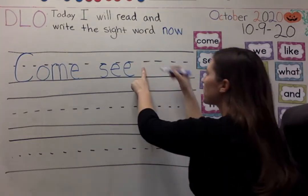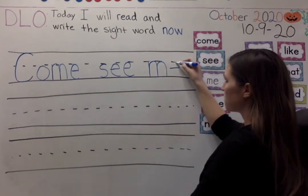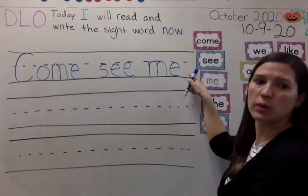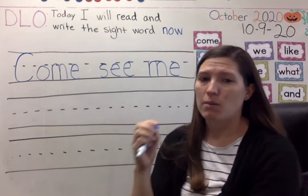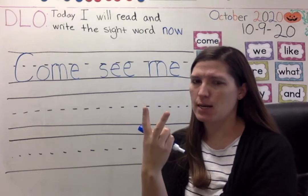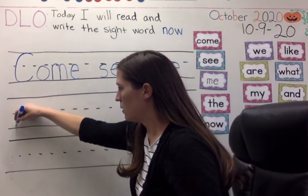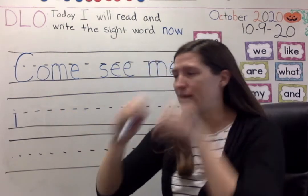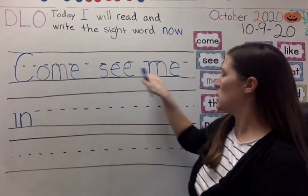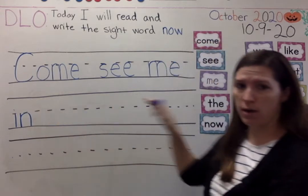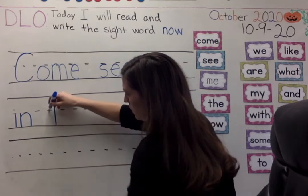Me — M-E. I ran out of room, so I need to go to the next line. 'In' — in is also a sight word but we can sound it out. I-N. What says I? I-I. What says N-N-N. Come see me in the — T-H-E, T-H-E — finger space. T-H-E, that's how to spell 'the,' you see.